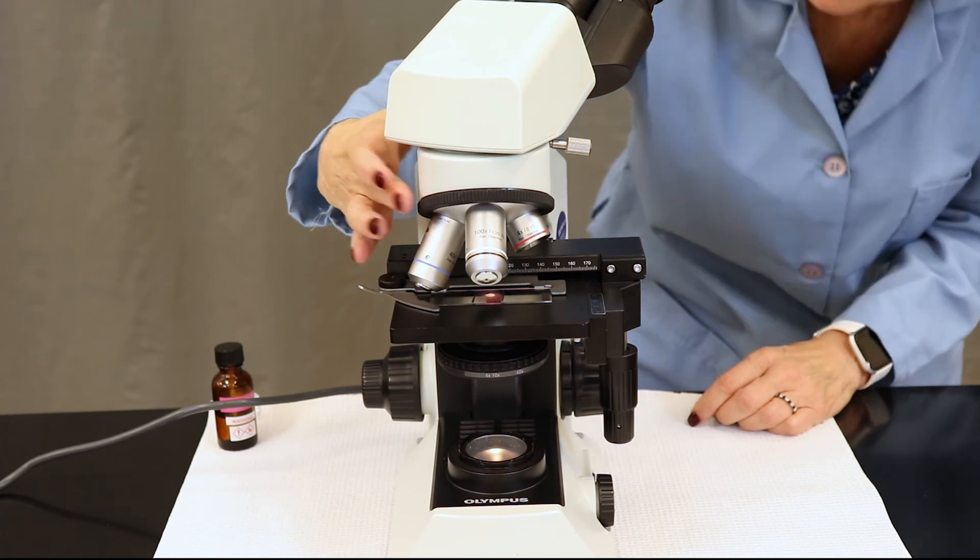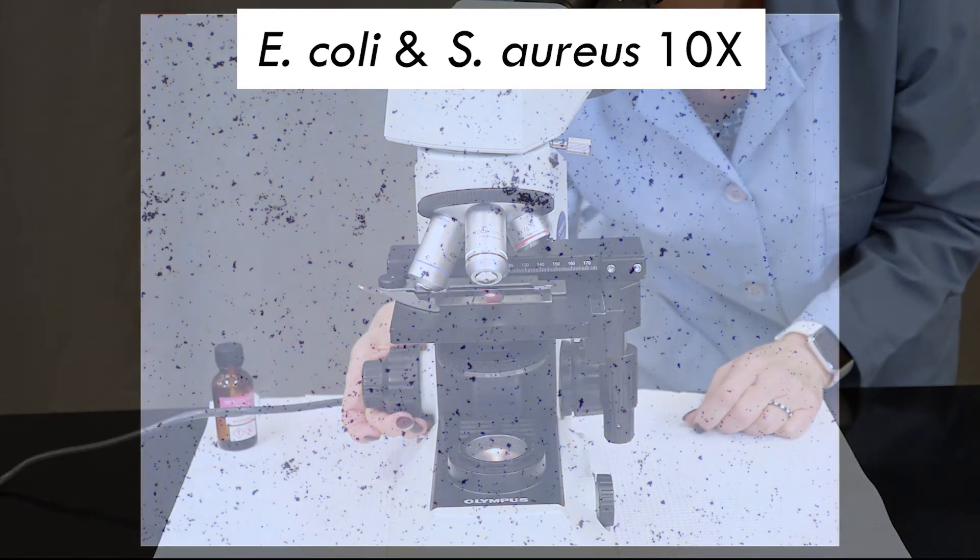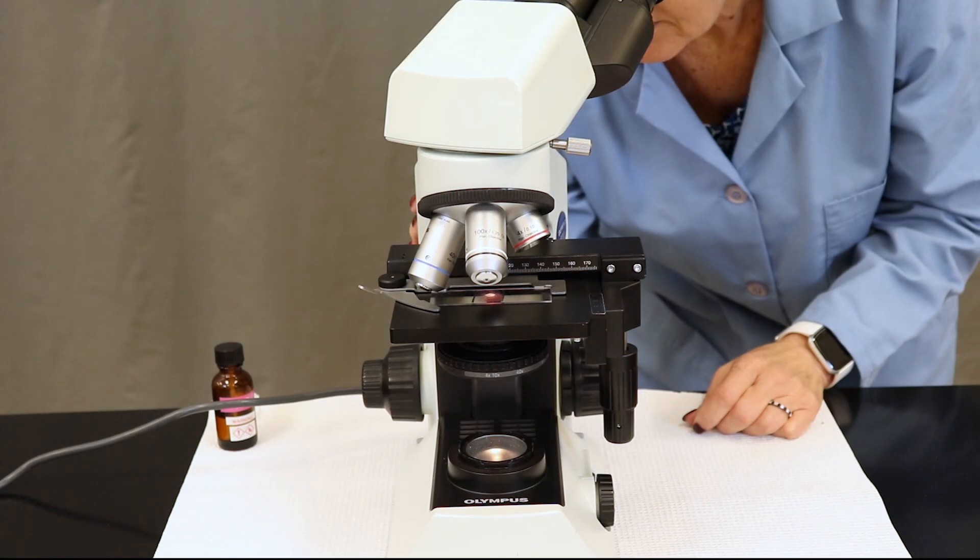Use the nose piece to place 10x in position. Since this is a par focal microscope, there's minimal adjustments that we need to do with the coarse adjustment knob, but adjust as necessary.